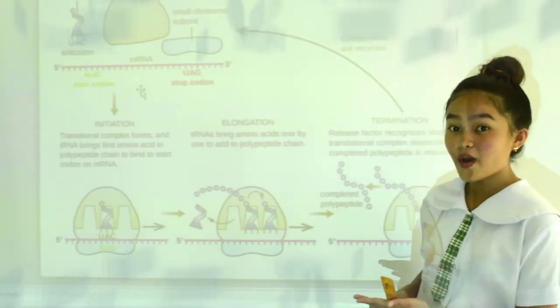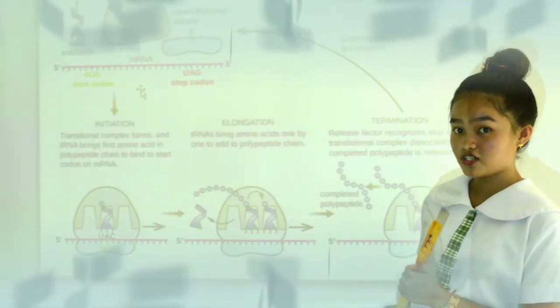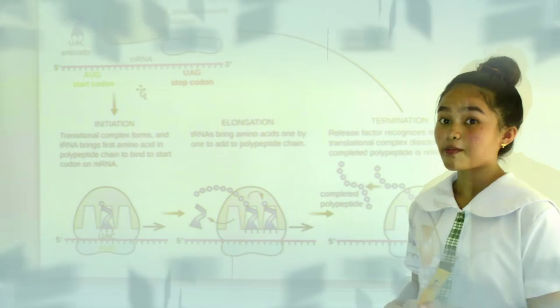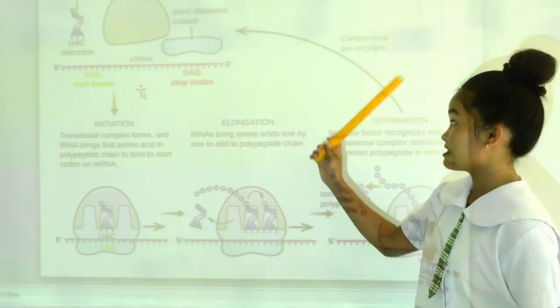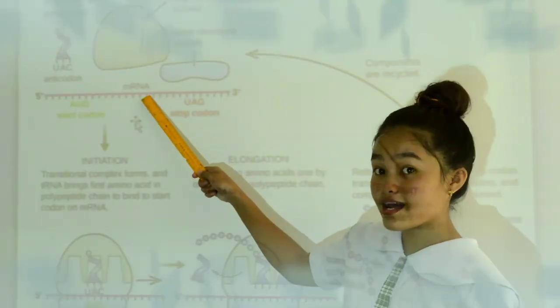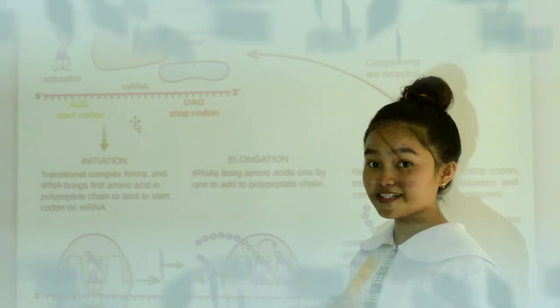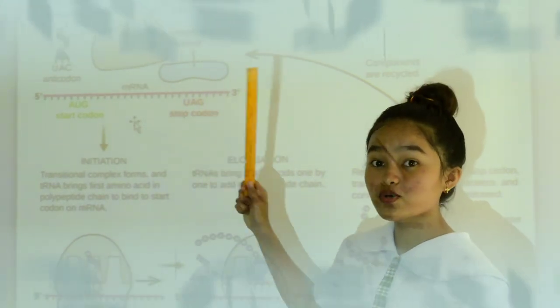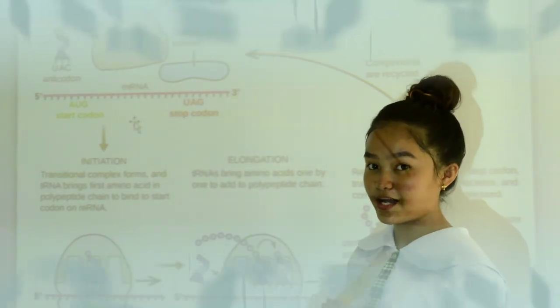Amazing! So, what will happen after transcription? It is where the translation begins. Translation, the second step in leading from a gene to a protein, takes place in the cytoplasm. The mRNA interacts with a specialized complex called ribosome,